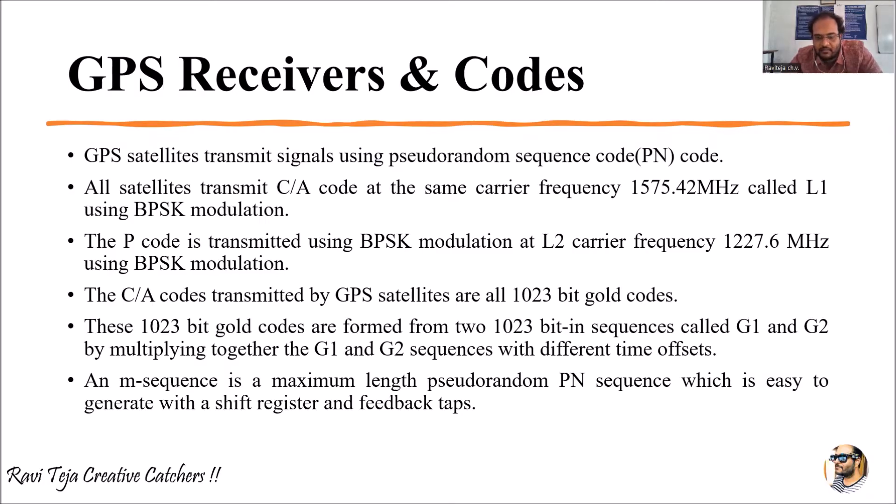These codes we consider as 1023 bit gold codes. These 1023 bit gold codes are formed from two 1023 bit-in sequences which are called G1 and G2. These G1 and G2 are multiplied together with different time offsets.